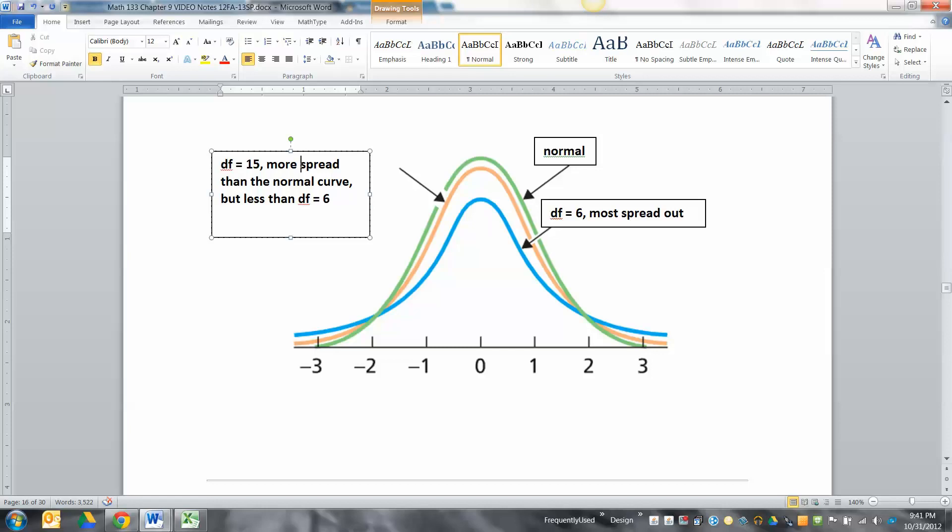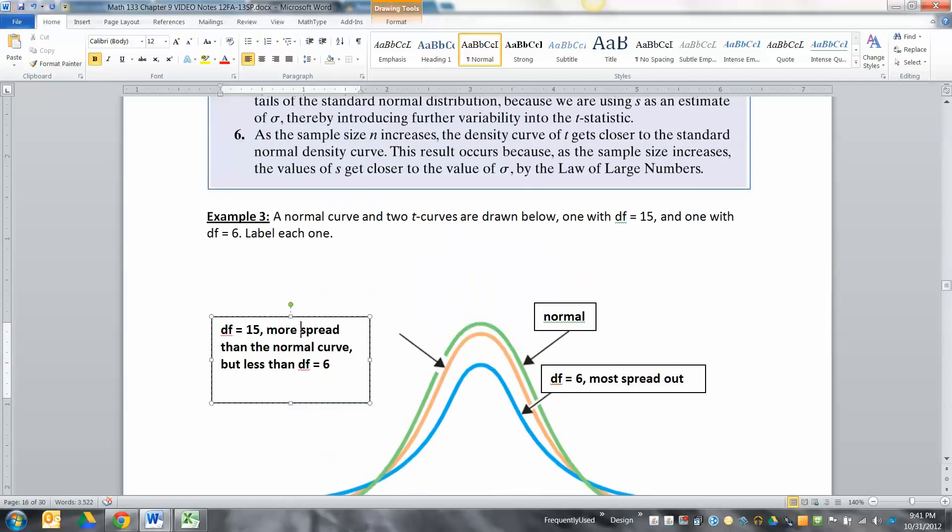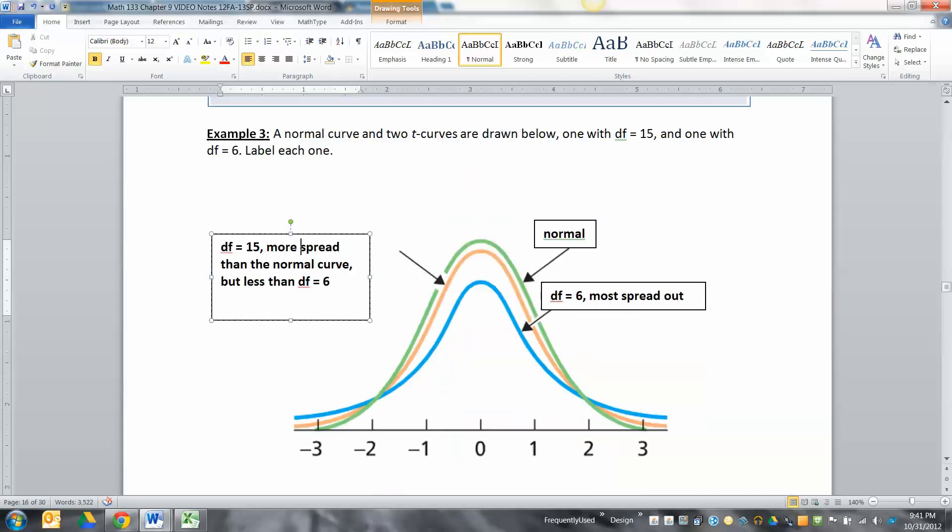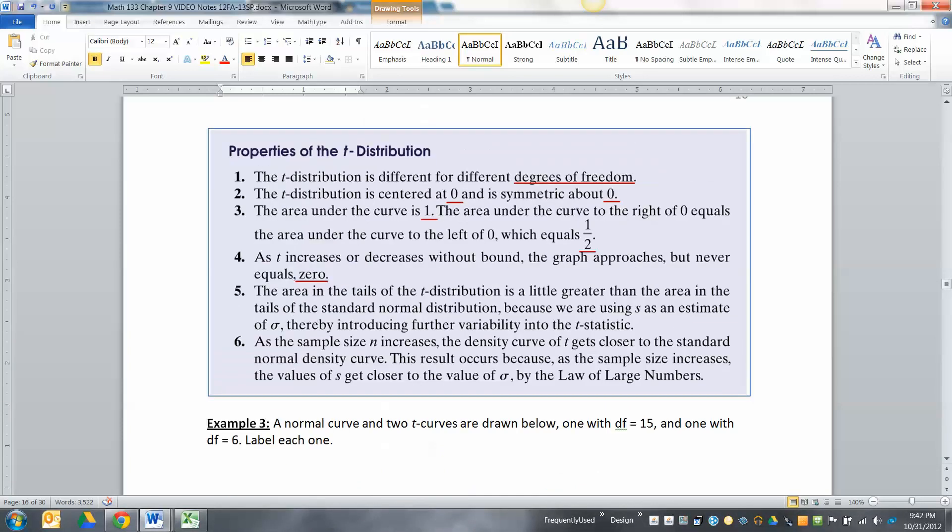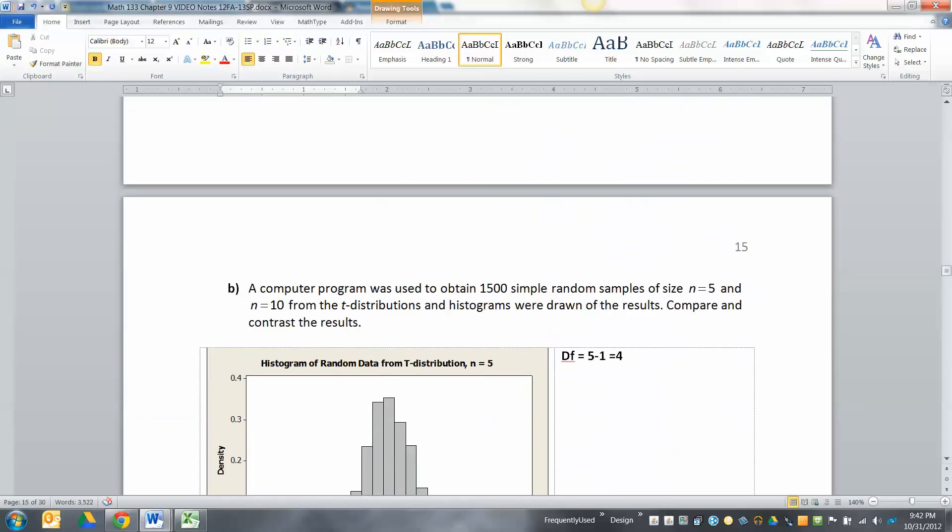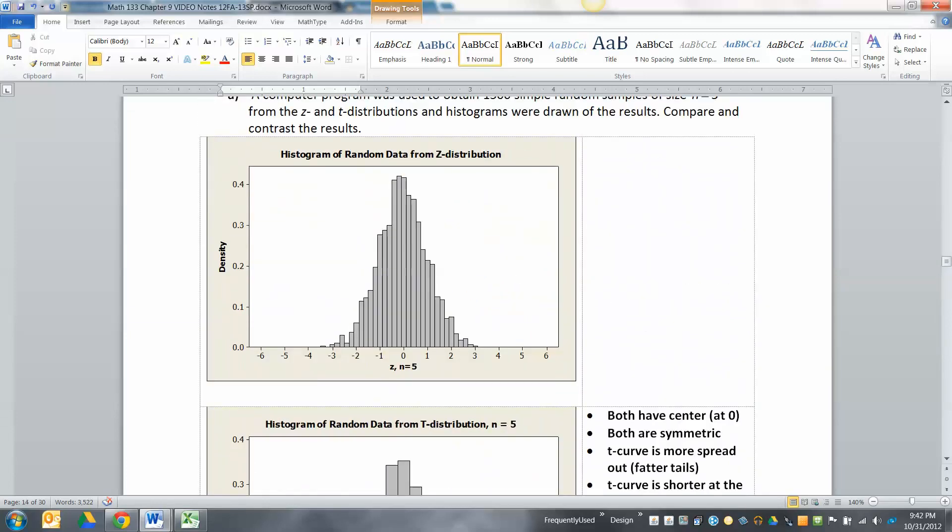As n increases, that means your degrees of freedom increases, and as your degrees of freedom increases, your curves get closer and closer to the normal curve. The normal curve is the best, most awesome curve you could have, and you can see it kind of right here with this one.